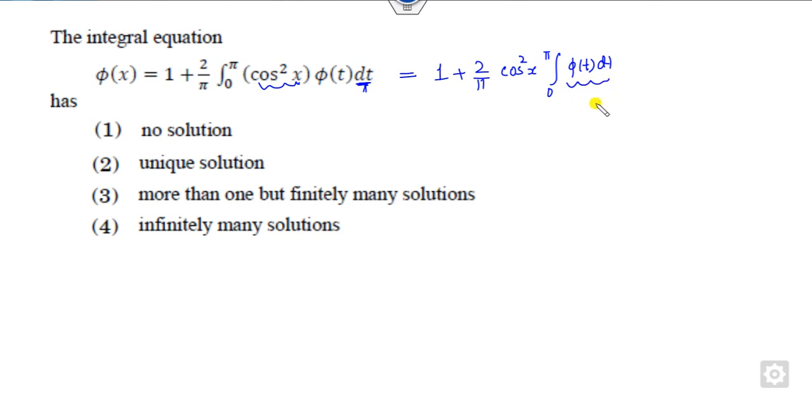Put always this integral as another constant, say a. What will happen is phi of x is nothing but 1 plus 2a upon pi cos square x, where a is this integral.